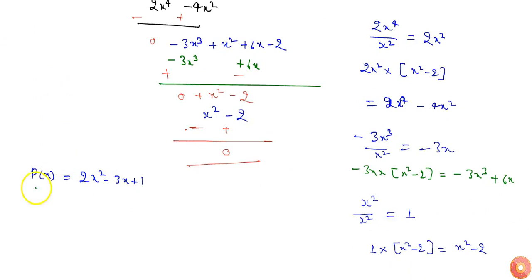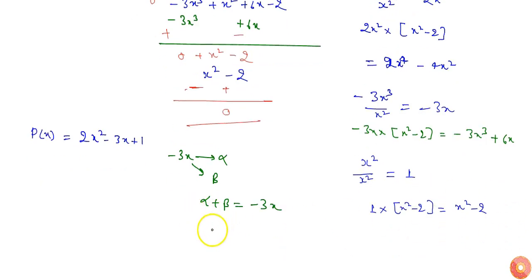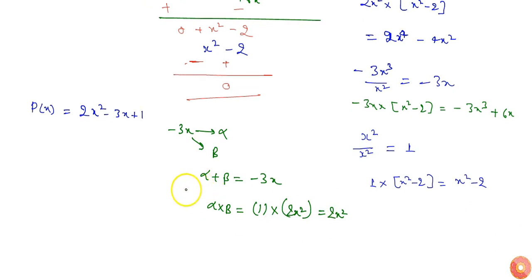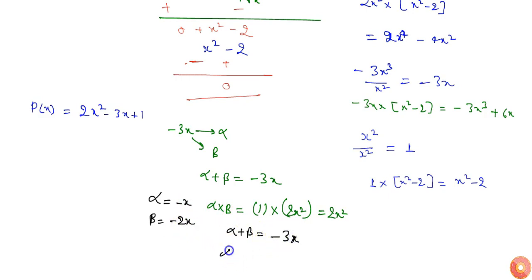Now we need to find the zeros of p(x). We split the middle term -3x into two terms α and β such that α + β = -3x and α·β = 2x² (product of 2x² and 1). If α = -x and β = -2x, then α + β = -3x and α·β = 2x², which satisfies both conditions.